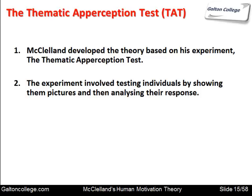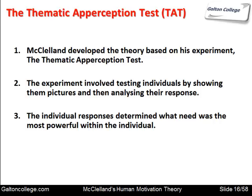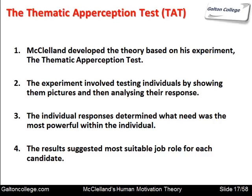There are three possibilities: achievement, affiliation, and power. By looking at these pictures and drawings, the individual can indirectly indicate — through describing what they've looked at — which of the three needs dominates and what sort of personality they have. The individual responses determine what need was most powerful within the individual, and based on that, the most suitable job role for each candidate can be worked out.